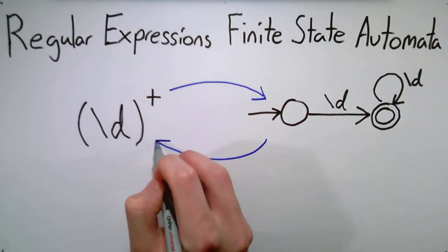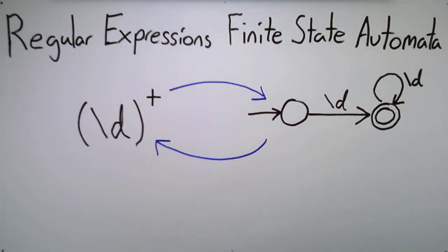For example, our regular expression for numbers, backslash D+, can be converted to this automaton: a non-accepting start state and an accepting state, with two transitions.